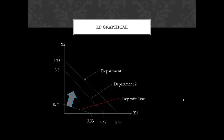We plot the isoprofit line. Since this is a max problem and department 2 is a binding constraint, we shift the isoprofit line up until we find the last point that touches the two lines.